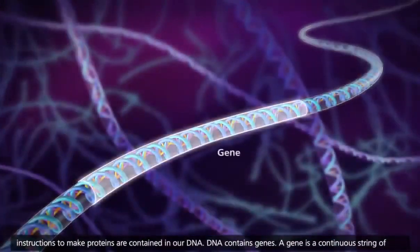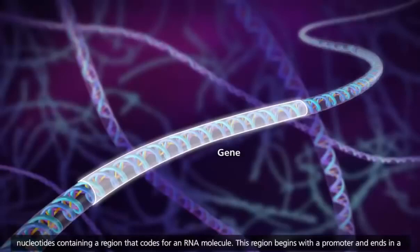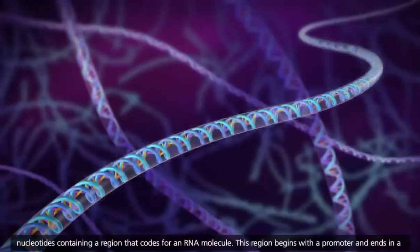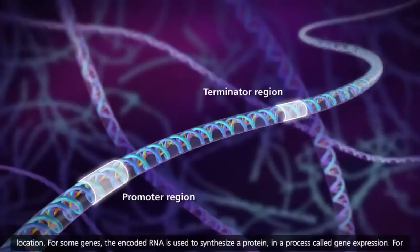DNA contains genes. A gene is a continuous string of nucleotides containing a region that codes for an RNA molecule. This region begins with a promoter and ends in a terminator. Genes also contain regulatory sequences that can be found near the promoter or at a more distant location.